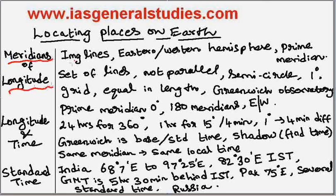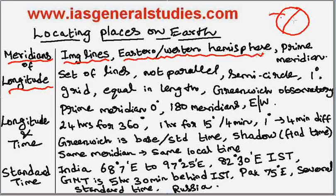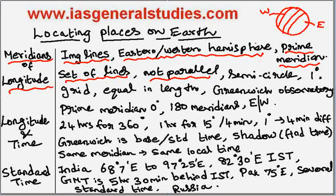Meridians of Longitude are imaginary lines running from the North Pole to the South Pole. These imaginary lines divide the Earth into the Eastern and the Western Hemisphere. There is a Meridian called the Prime Meridian which divides the Eastern and the Western Hemisphere. These lines are not parallel — they appear like a semicircle, but all converge at the poles.